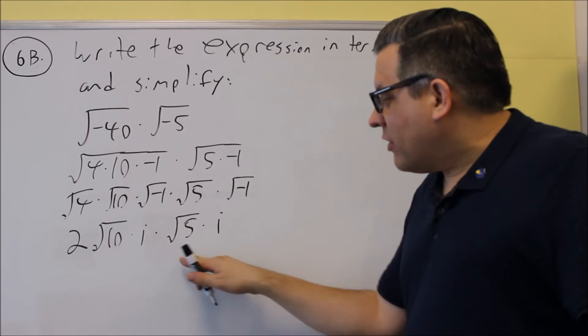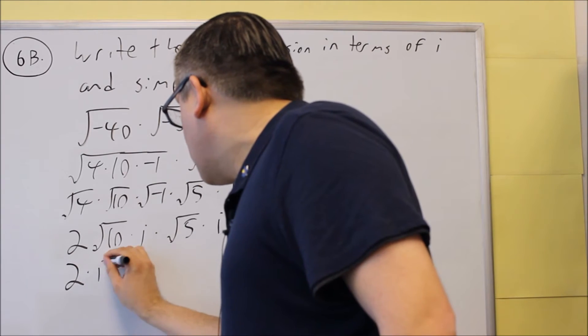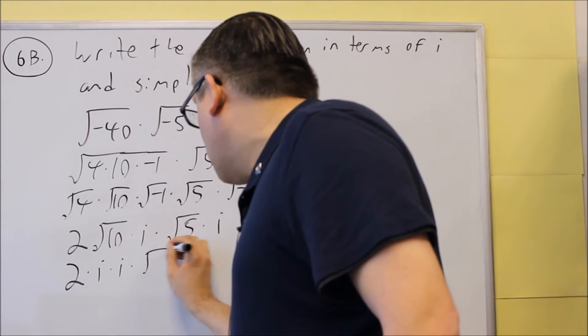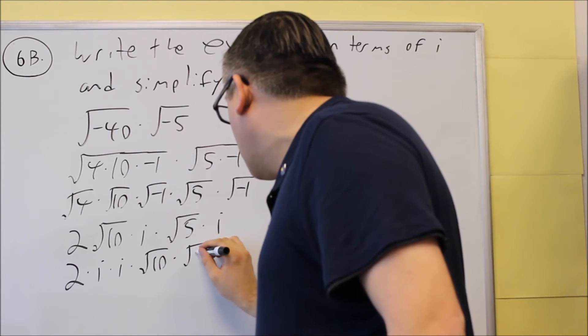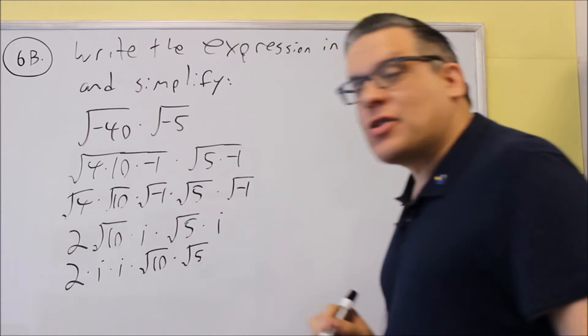We're going to switch the order around on these. So we do 2 times i times i times square root of 10 times square root of 5. We're allowed to switch the order around because it's multiplication.